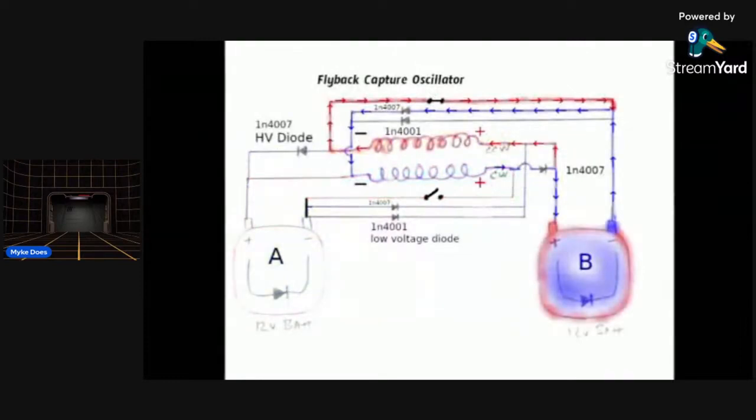You can see the bottom coil has just flipped its polarity. Whereas before the left side of the bottom coil was positive, it's now negative, and you see the right side is positive instead of negative now.